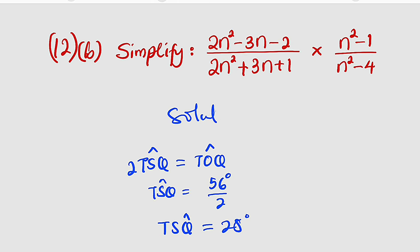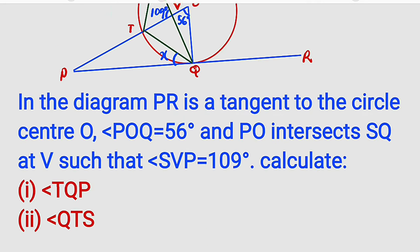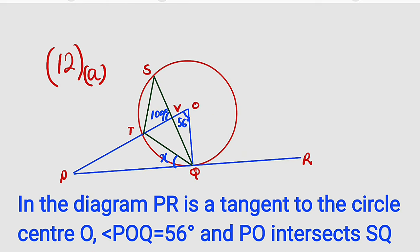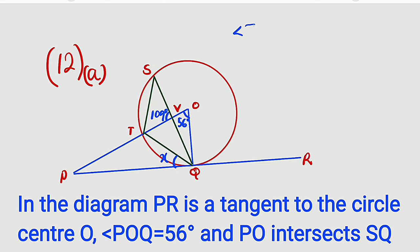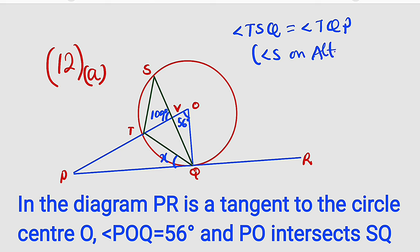This is our solution to question 12a, part one. Remember the alternate segment theorem, which states that the angle formed by the tangent and the chord — which I have marked as x — is always equal to the interior angle subtended at the circumference from the same chord. So this particular angle must equal this one. We write: angle TSQ equals angle TQP. The reason is: angles in alternate segment.